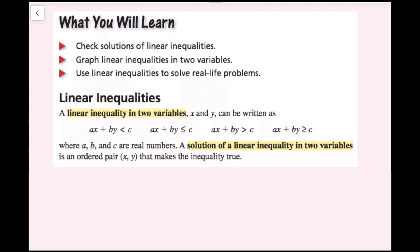A linear inequality in two variables x and y can be written as ax plus by is less than c, ax plus by is less than or equal to c, ax plus by is greater than c, or ax plus by is greater than or equal to c, where a, b, and c are real numbers. A solution of a linear inequality in two variables is an ordered pair x, y that makes the inequality true.